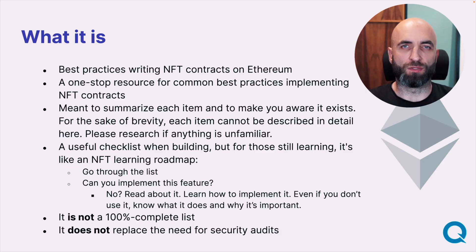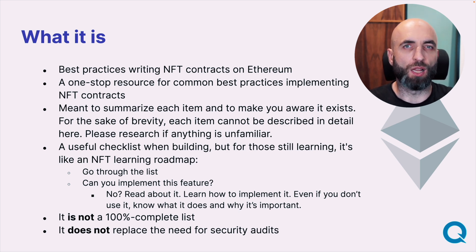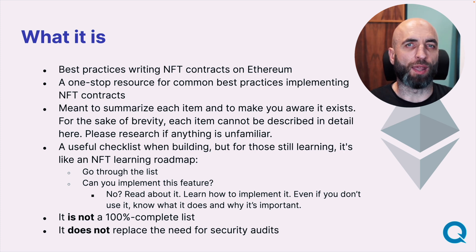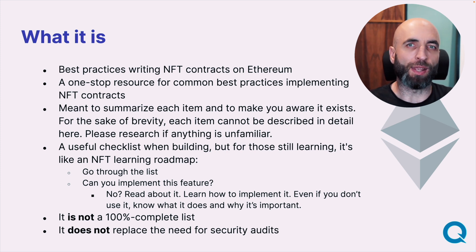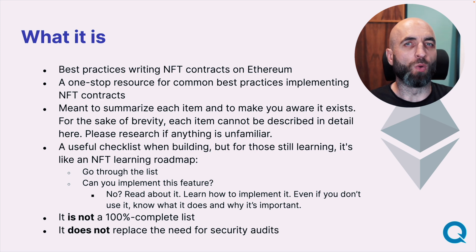It's practically impossible to write a bad NFT smart contract with this 73-point checklist. If you're new at smart contract writing, this can be an NFT learning roadmap for you. You can go through the checklist one by one and ask yourself: can you implement this feature? Do you understand what it does? Do you know why it's important? If yes, go to the next point. If not, go read about it, learn it, implement it, then come back.